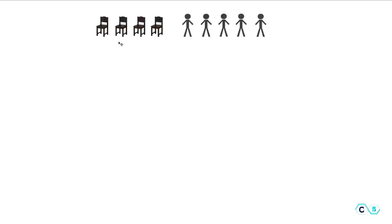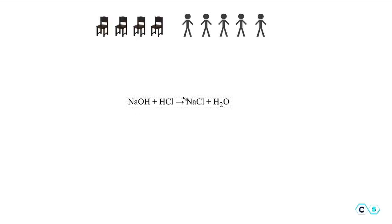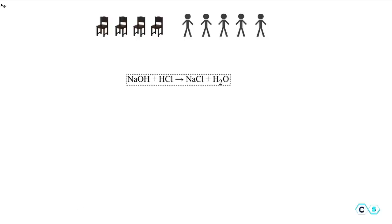Let's imagine a situation where we have four chairs and five people trying to sit on the chairs. What is the limiting factor here? Everyone will agree that the chairs are the limiting factor because we don't have enough chairs for everyone to sit down. This similar situation occurs in chemical reactions — sometimes one of the reagents is more than the other and we don't have enough of one to react completely with the other.